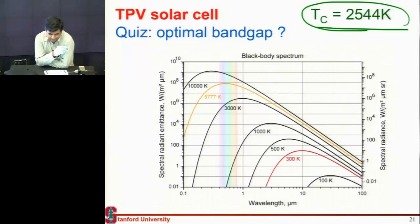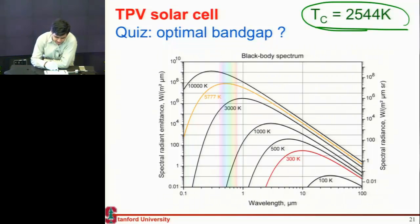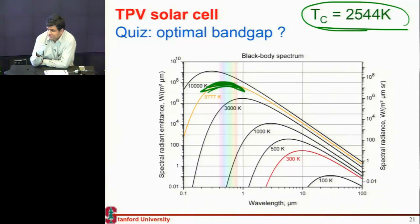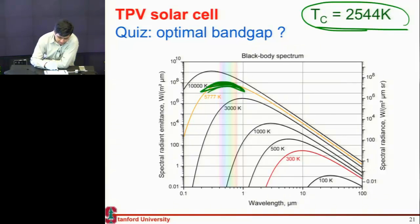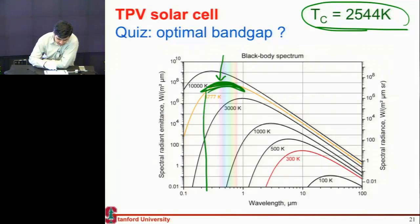Ben skipped a few steps and gave the answer directly, but let me take a baby step and explain his answer. So whenever I'm designing a solar cell, usually where do I place my band gap? I place my band gap so that it has a wavelength which corresponds to the maximum of the spectrum I'm trying to absorb. So when I'm absorbing energy from the sun, the temperature of the sun is close to 6,000 Kelvin, so I design my materials such that they have their cutoff wavelength or band gap which corresponds to this energy.